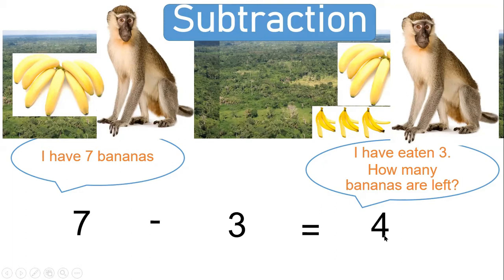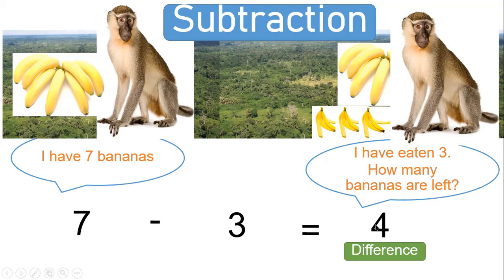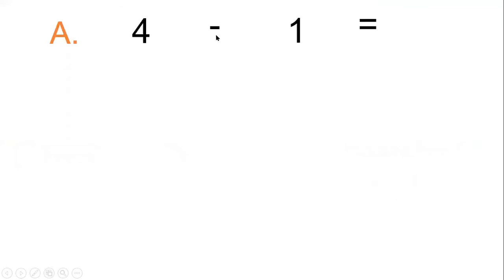I have four bananas left. Now let us read this number sentence: seven minus three equals four. We say that four is the difference. Four — we call it the difference. The answer that we get after subtracting, we call it the difference.